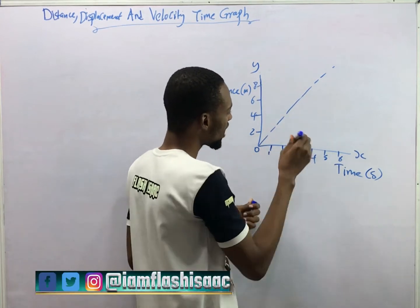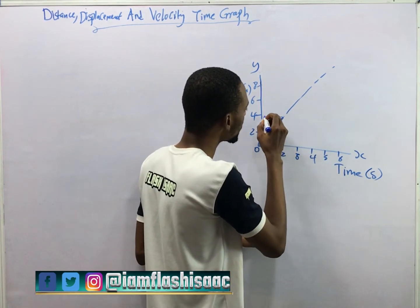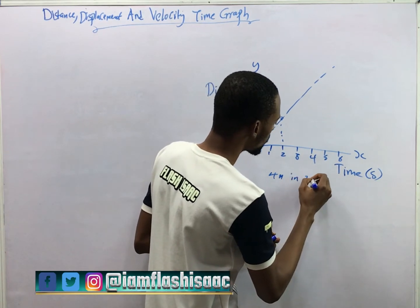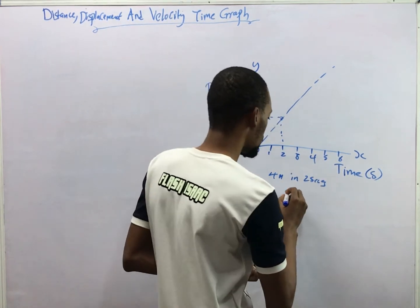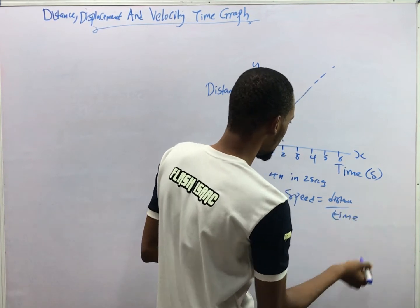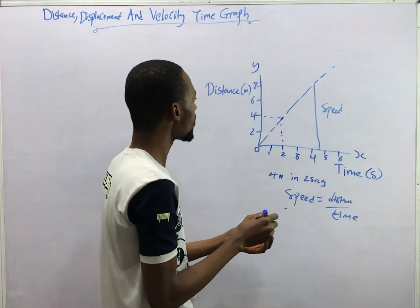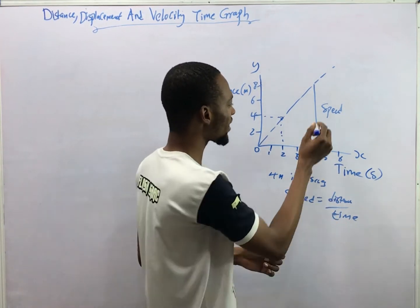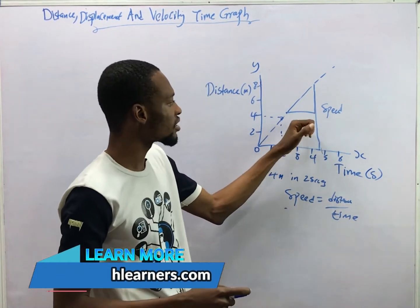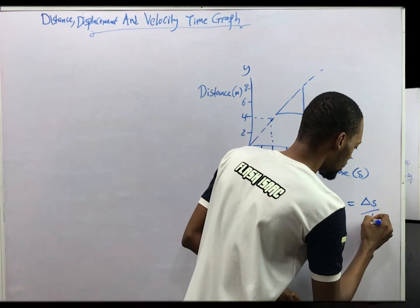So after going up, at this point this is two seconds and this is four meters. If approximately at this point you are moving four meters in two seconds, that means your speed equals distance over time. So the slope of this graph is simply your speed. The slope of the distance-time graph is speed. However you take the slope — cut it this way or that way — that slope represents speed, because speed equals distance over time.